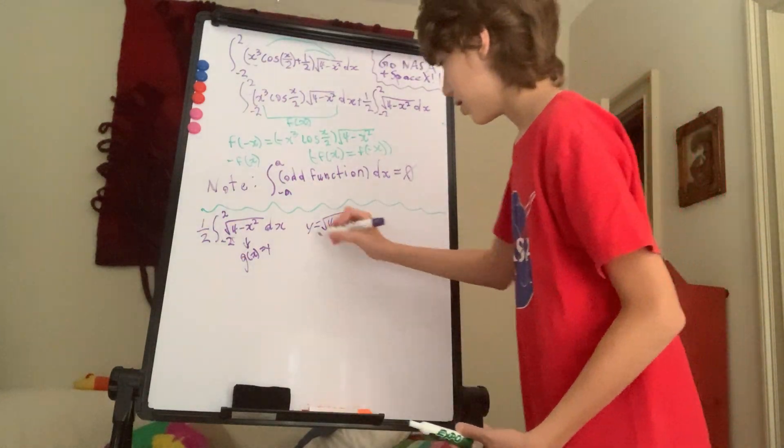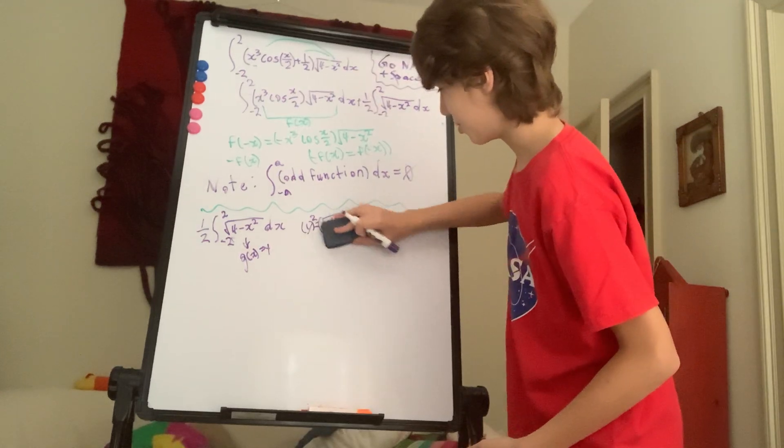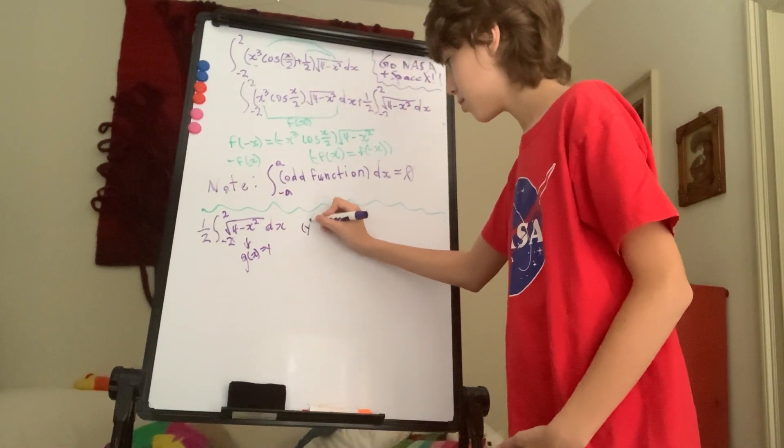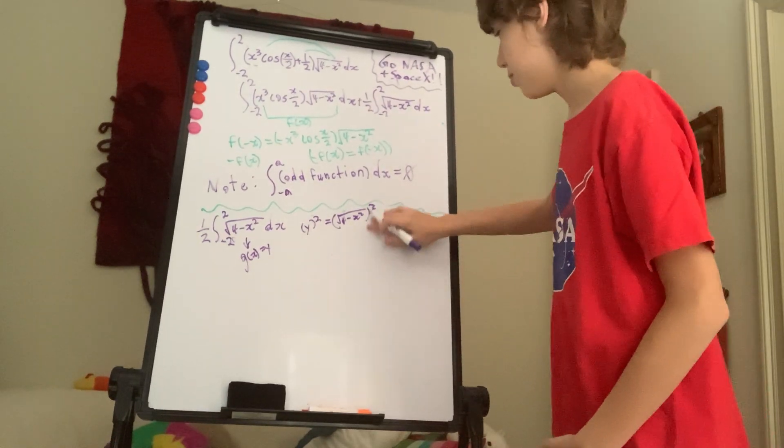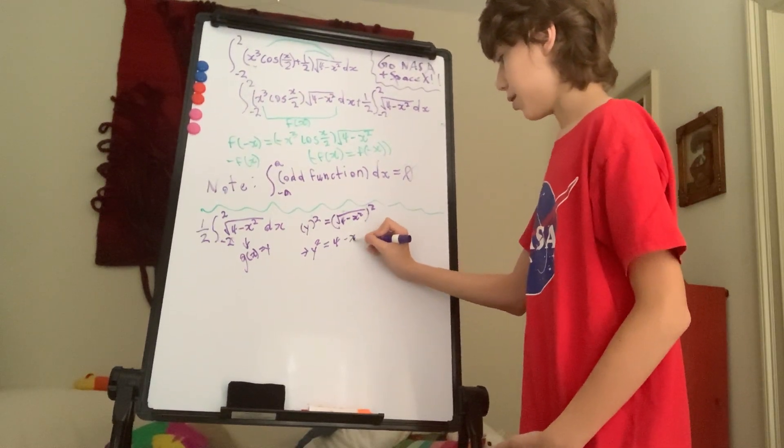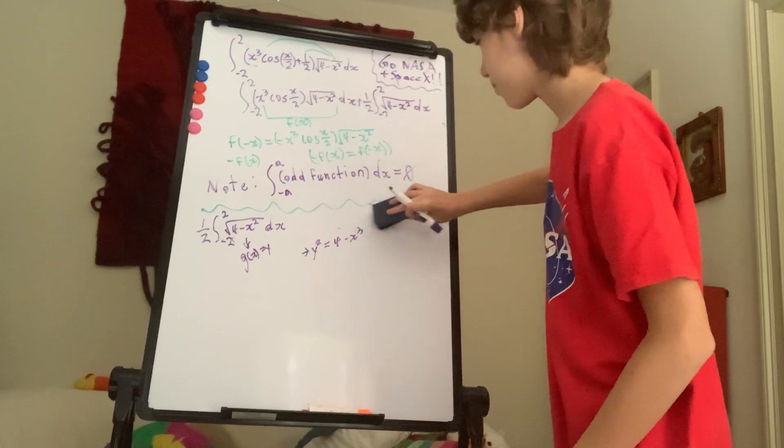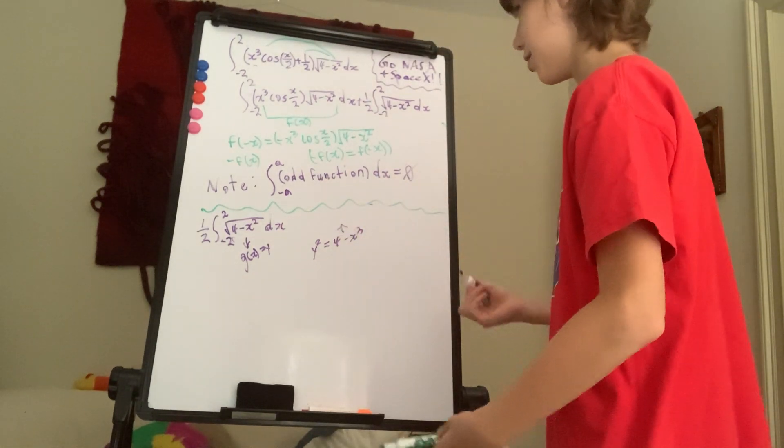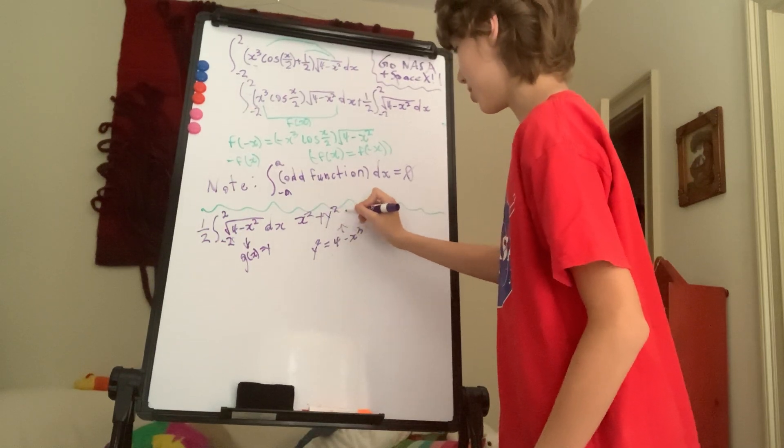Okay. Now, again, if you're very observant, you'll realize that if we square both sides of this equation, don't you wish we could just do control Z in real life, it would be really amazing. You can square both sides and you get y squared equals root four minus x squared squared. You cancel the root and you get y squared equals four minus x squared. When you simplify this, you actually get, when you simplify this, if you add x squared and y squared to both sides, you get y squared plus, oh, x squared plus y squared equals two squared.